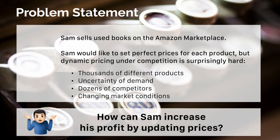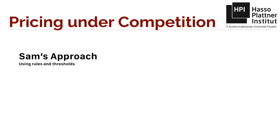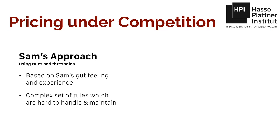So the question is: how can Sam set the perfect prices in order to increase his own profit? The classical answer is a dynamic pricing approach that is based on rules and thresholds, which is employed by Sam as well as the majority of merchants on the Amazon Marketplace. These rules are developed over time using the seller's experience and gut feeling. Over time, these rules usually become very large and complex, making them hardly maintainable.